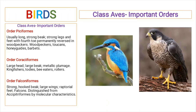Order Coraciiformes includes birds that have a large head, a large beak, and metallic or variously colored plumage. It includes kingfishers, todies, bee-eaters, and rollers. Order Falconiformes includes birds that have a strong hooked beak, large wings, and raptorial feet; these include falcons.